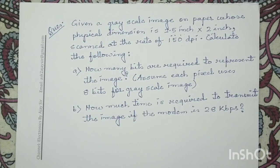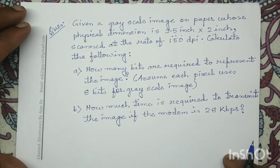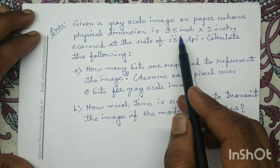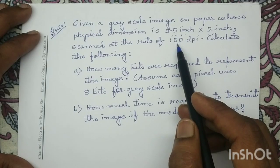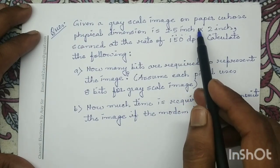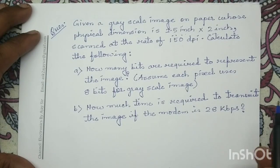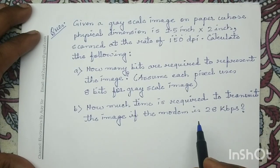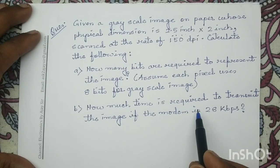Good morning all. Today we will solve another question on image size determination and its transmission. In this question, the physical dimension of the image is given to us, the scan rate is 150 dpi. With these given conditions we have to determine the size of the image as well as its transmission time.